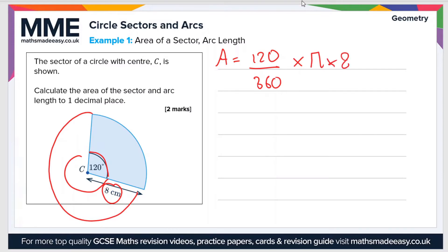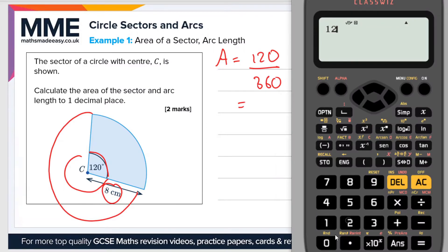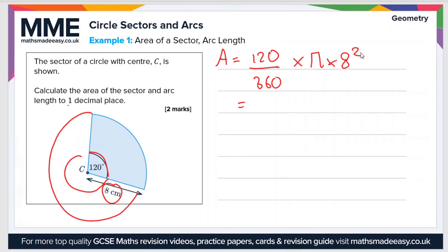The radius in this case is 8 centimeters, so the area equals 120 divided by 360, times pi, times 8 squared. Plugging that into the calculator gives us a value of 67.0 centimeters squared, to one decimal place.